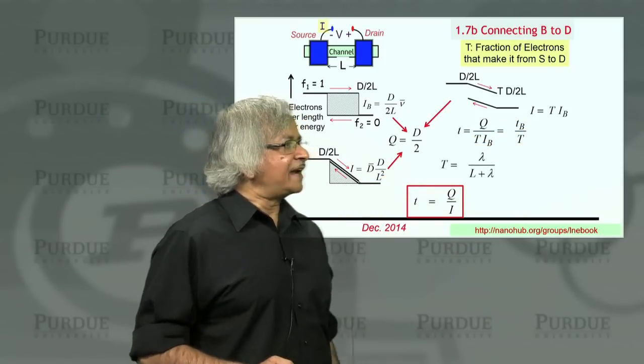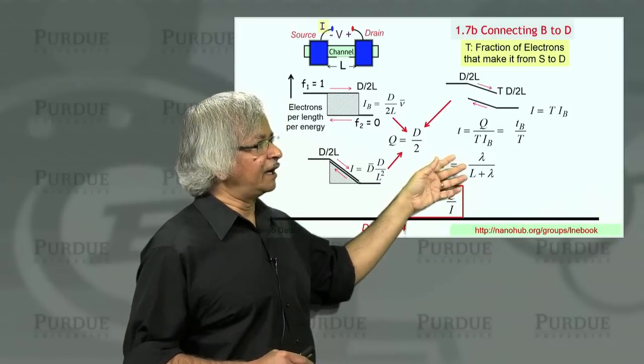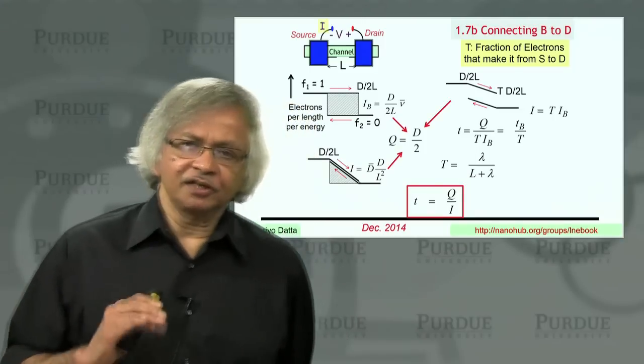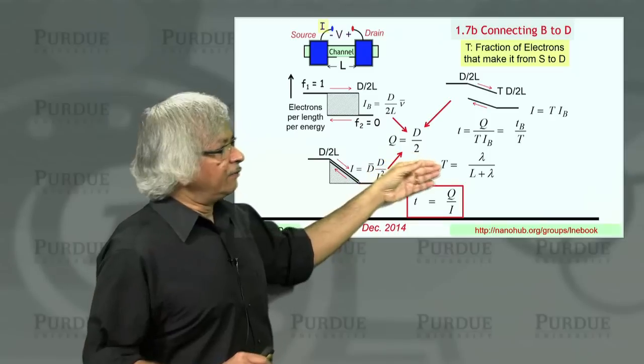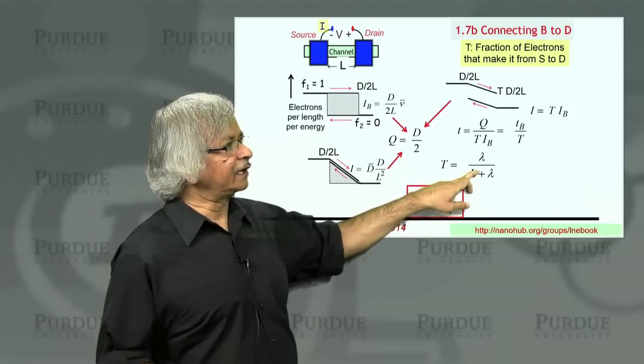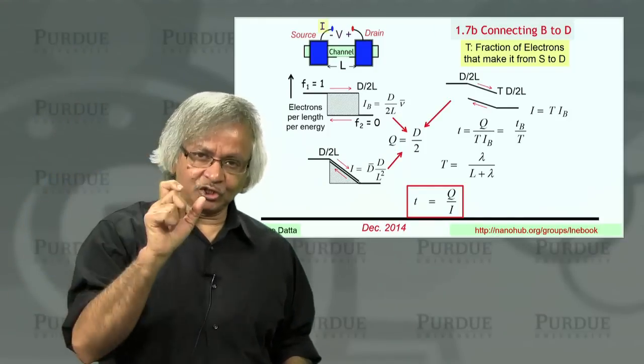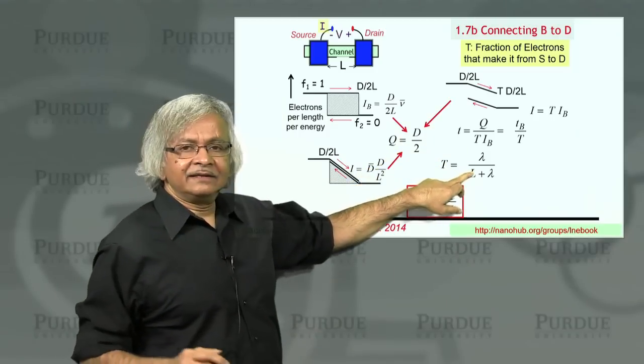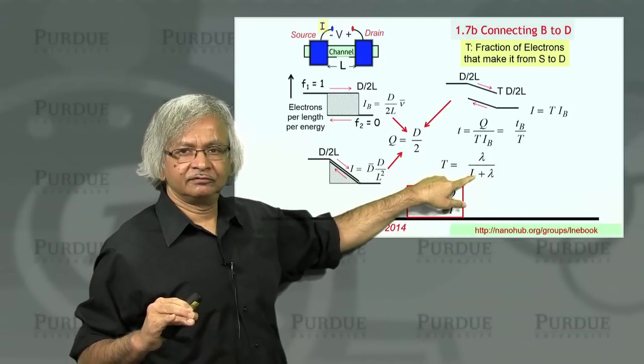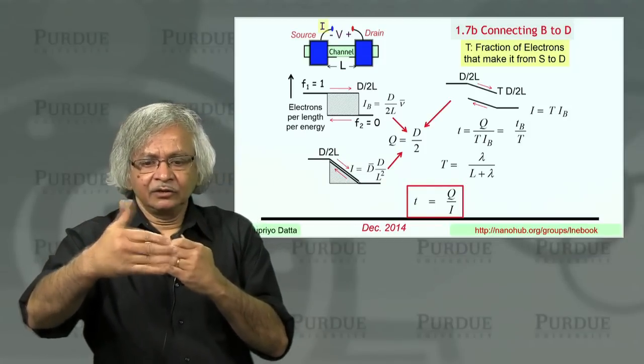Now this transmission coefficient, or this fraction of electrons that get from left to right, that's actually given by mean free path divided by length plus mean free path. One could use this almost as a definition for mean free path. When the length is really short compared to a mean free path, I can drop this so that T is 1, which means 100 percent of all the electrons get through for a short thing. When the length is approximately one mean free path, if I put L equal to lambda, I'll get a T of half. So you could say that's the way I'll define my mean free path. It's the length such that only 50 percent get through.